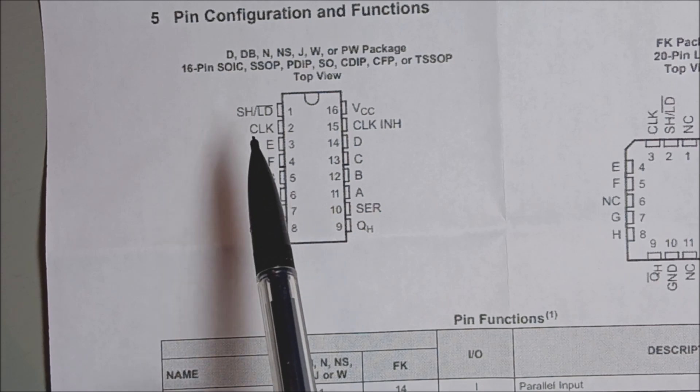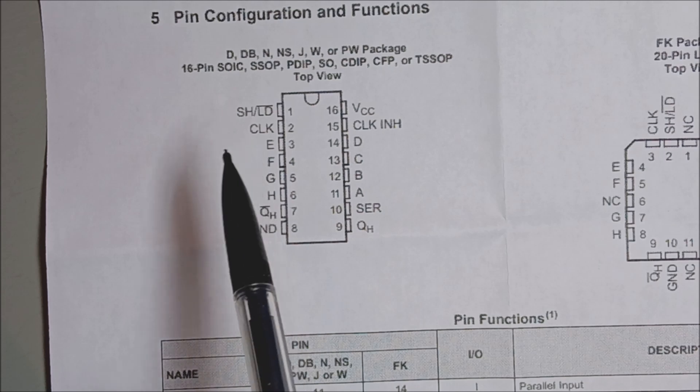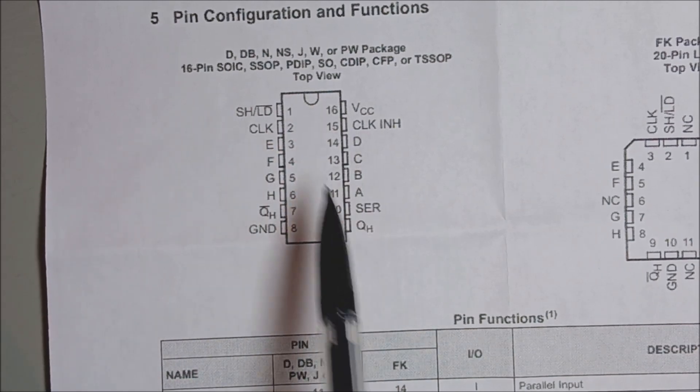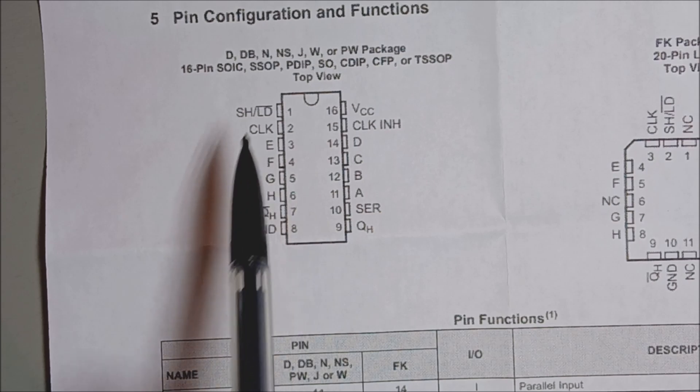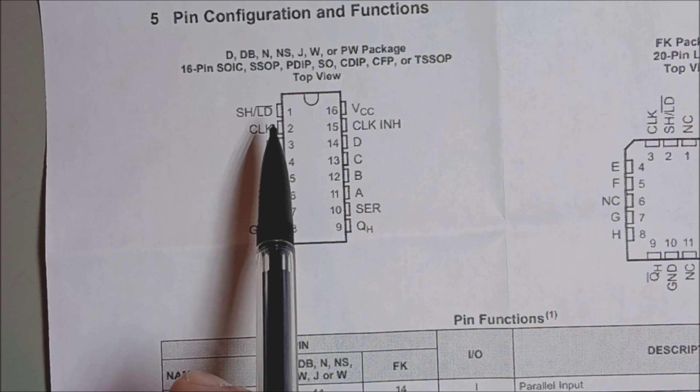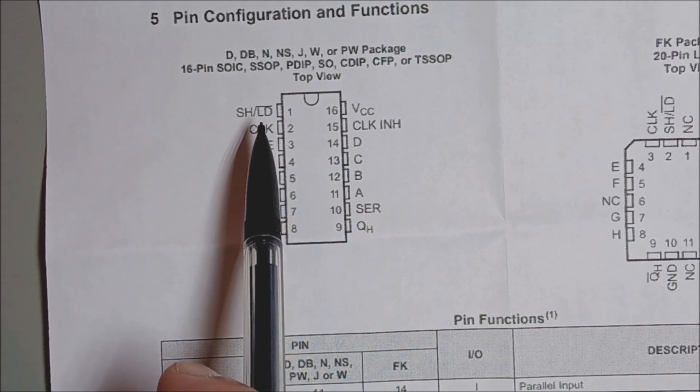The other pin, the second pin that you need to make use of when you're using this chip, is pin 2 which is the clock pin. So first you have your data hooked up to all the data pins, then you hit the shift load, and then you clock in each subsequent bit one at a time.